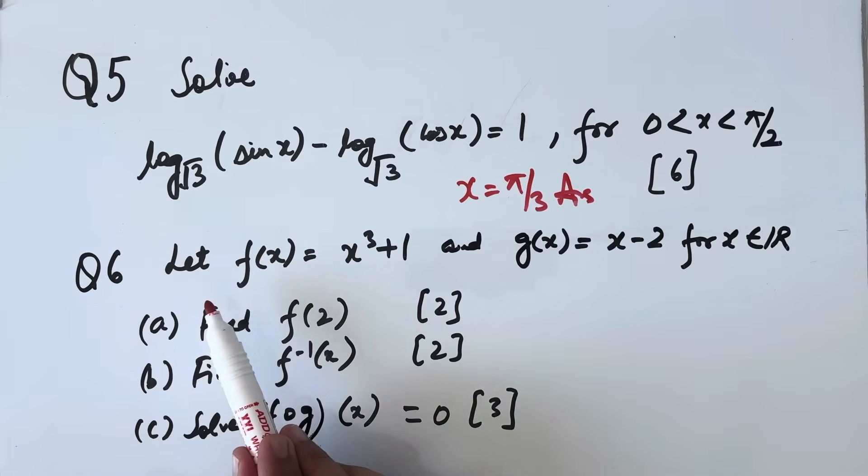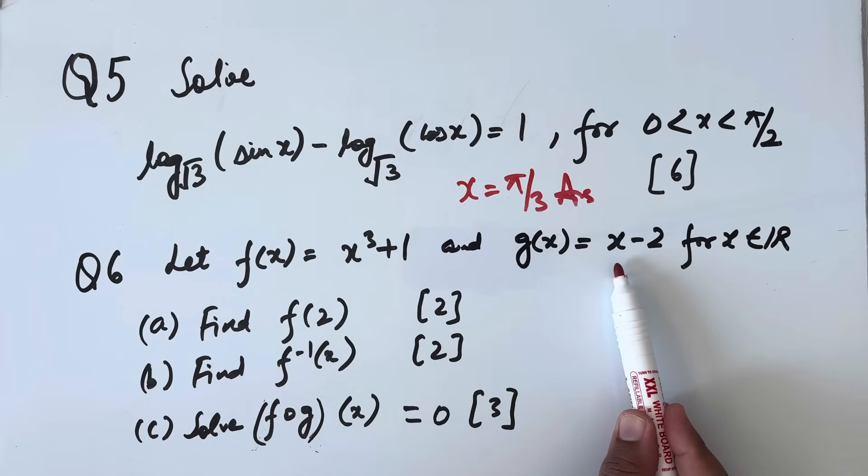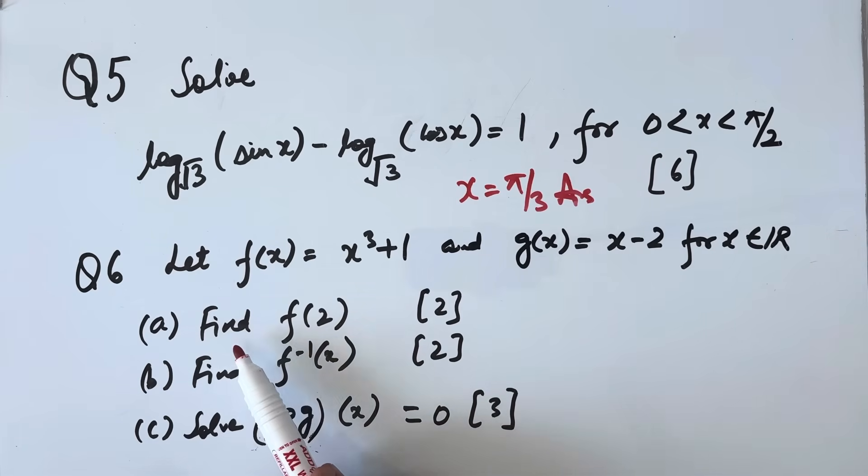Question number 6: Let f(x) = x³ + 1 and g(x) = x - 2 for x belongs to any real number. Part a, find f(2), this is of 2 marks. Part b, find f inverse x, this is of 2 marks. Part c, solve f(g(x)) = 0.